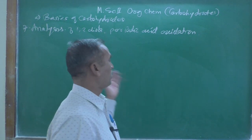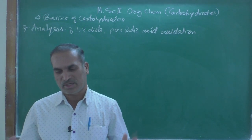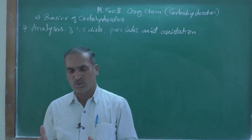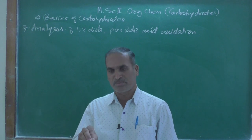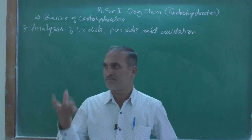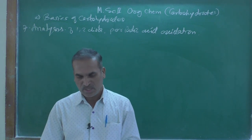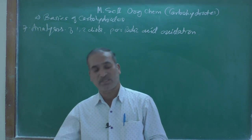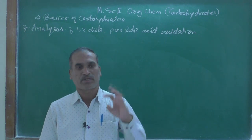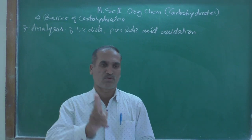So far we have seen six chemical properties. The next one is the analysis of 1,2-diol — that is periodic oxidation. As we know, carbohydrates are polyhydroxy aldehydes or ketones. The most frequently occurring carbohydrates are pentoses and hexoses, and glucose belongs to the aldohexoses. The IUPAC name of glucose reflects that it is an aldohexose because there are six carbon atoms. The first property we saw was the molecular formula, C₆H₁₂O₆.